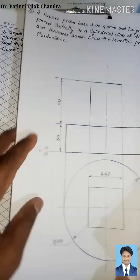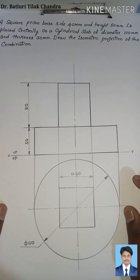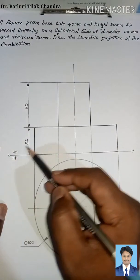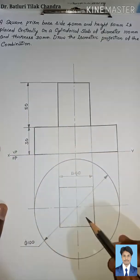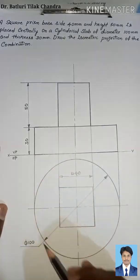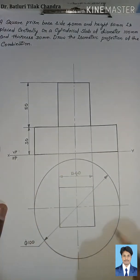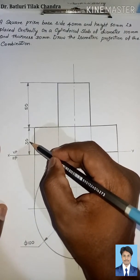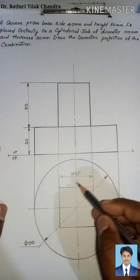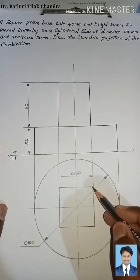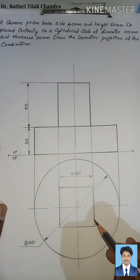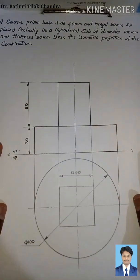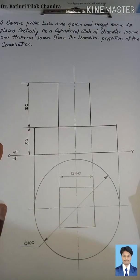I will show you the orthographic view of this problem. Here the XY line: above the XY line is VP, below the XY line is HP. VP is always seen from front view, HP is always seen from top view. The diameter of the cylindrical slab is 100 mm as seen in the top view, thickness is 30 mm seen in front view. The square prism base side is 40 mm seen in top view and height 50 mm seen in front view.